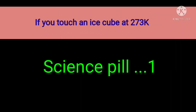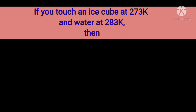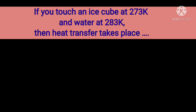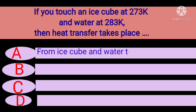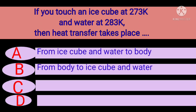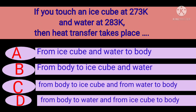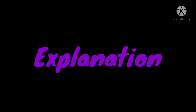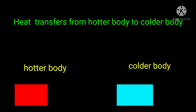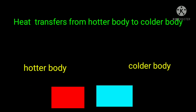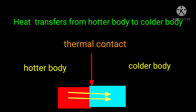Science question: If you touch an ice cube at 273 Kelvin and water at 283 Kelvin, then heat transfer takes place: (a) from ice cube and water to body, (b) from body to ice cube and water, (c) from body to ice cube and from water to body, (d) from body to water and from ice cube to body. Explanation: Heat transfers from a hotter body to a colder body when they are in thermal contact.